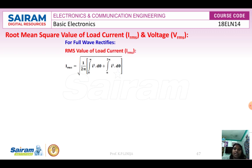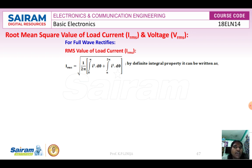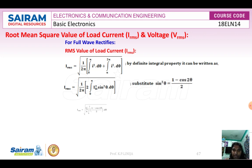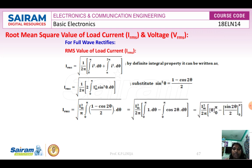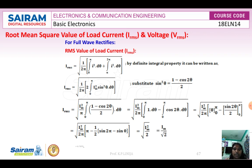For the full wave rectifier, since both the positive and negative half cycles produce output, we apply a definite integral property to avoid tedious calculation. The result gives I²RMS equals Im²/2, so IRMS equals Im/√2, which equals 0.707 × Im. That means the RMS value of current or voltage for the full wave rectifier is 70.7% of the maximum value.